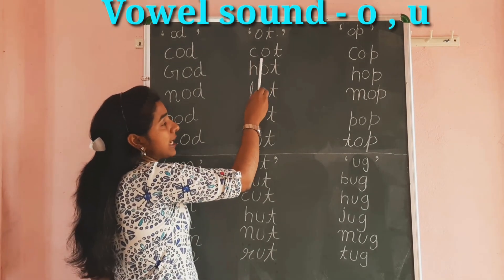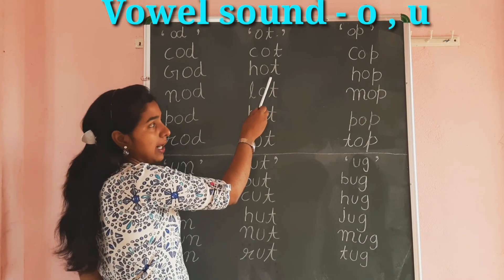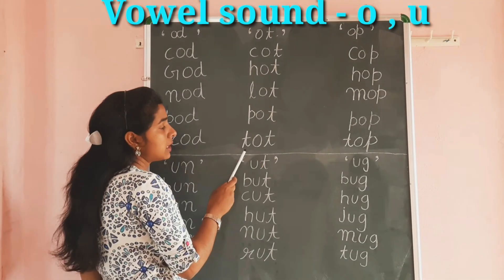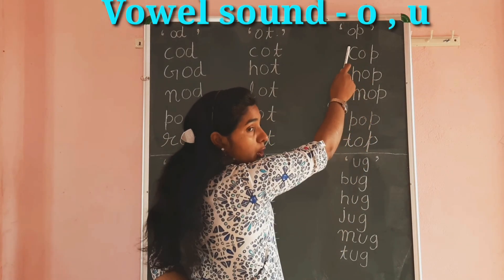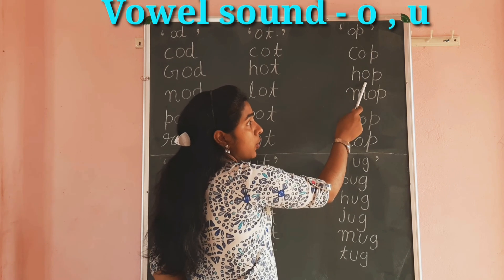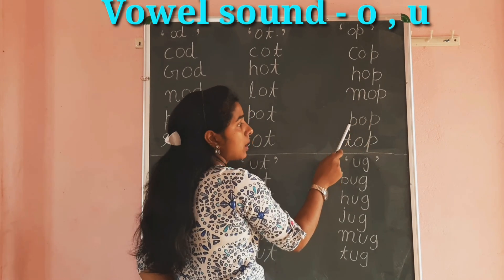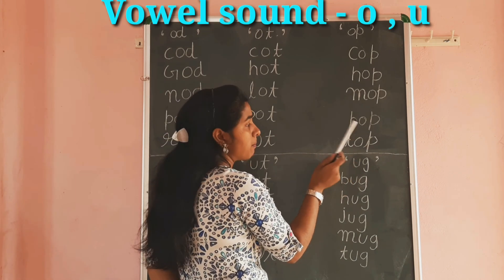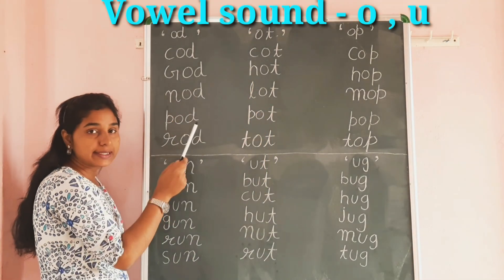Now we learn the sound of O with O-T words: Odd. C-O-T, Cot. H-O-T, Hot. L-O-T, Lot. P-O-T, Pot. T-O-T, Tot. So we will learn the sound of O with different words and different pronunciation.